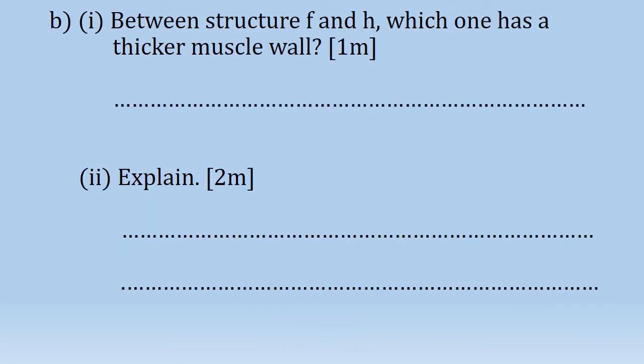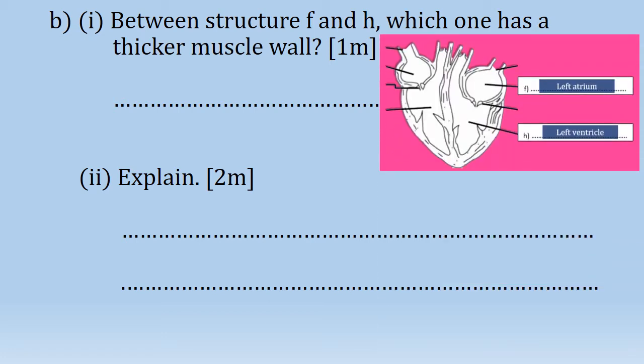Question 1b: between structure F and H, which one has a thicker muscle wall? One mark. Let's review the diagram to compare between F and H. The ventricle's muscular walls are thicker than the atrium because they have to pump blood out of the heart. So the answer should be the left ventricle, or H.